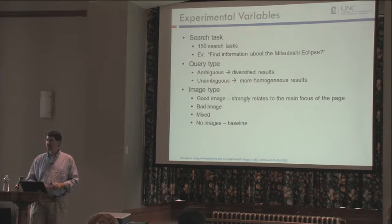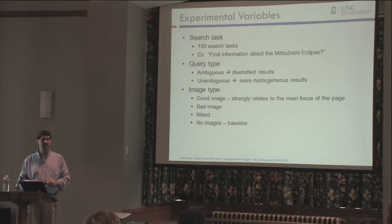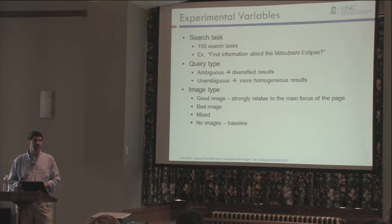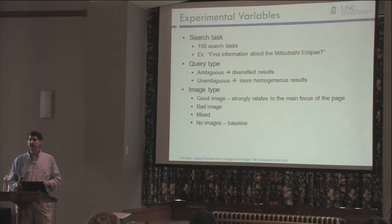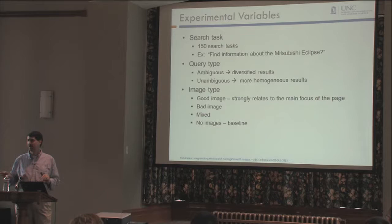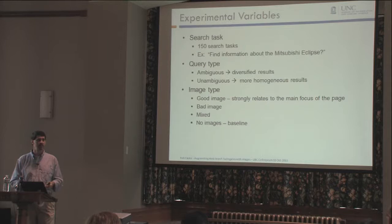We had several experimental variables. First was the search task — we developed 150 search tasks of the form 'find information about topic X.' The query type was either ambiguous or unambiguous: ambiguous queries led to more diversified results, unambiguous to more homogenous results. For image type, we had good images, bad images, a mixed condition, and no images as our baseline — four conditions in total.